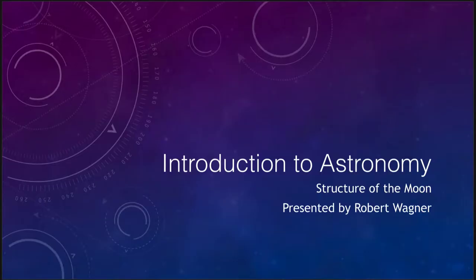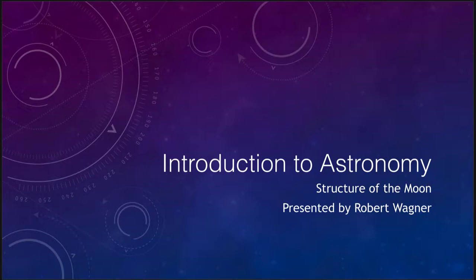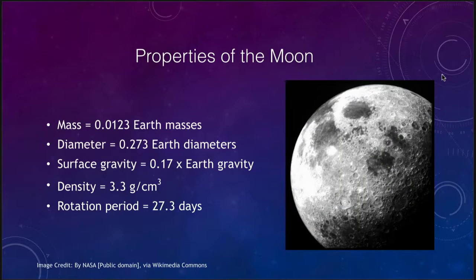Greetings and welcome to the introduction to astronomy. In this video we are going to look at the structure and features that we see on the moon, our closest celestial neighbor here on the earth. We'll look at some of the various properties and features that we can actually see on the moon, and the type of rocks that have been explored and brought back to the earth from the moon by the Apollo astronauts. Let's get started with some of the basic properties of the moon.